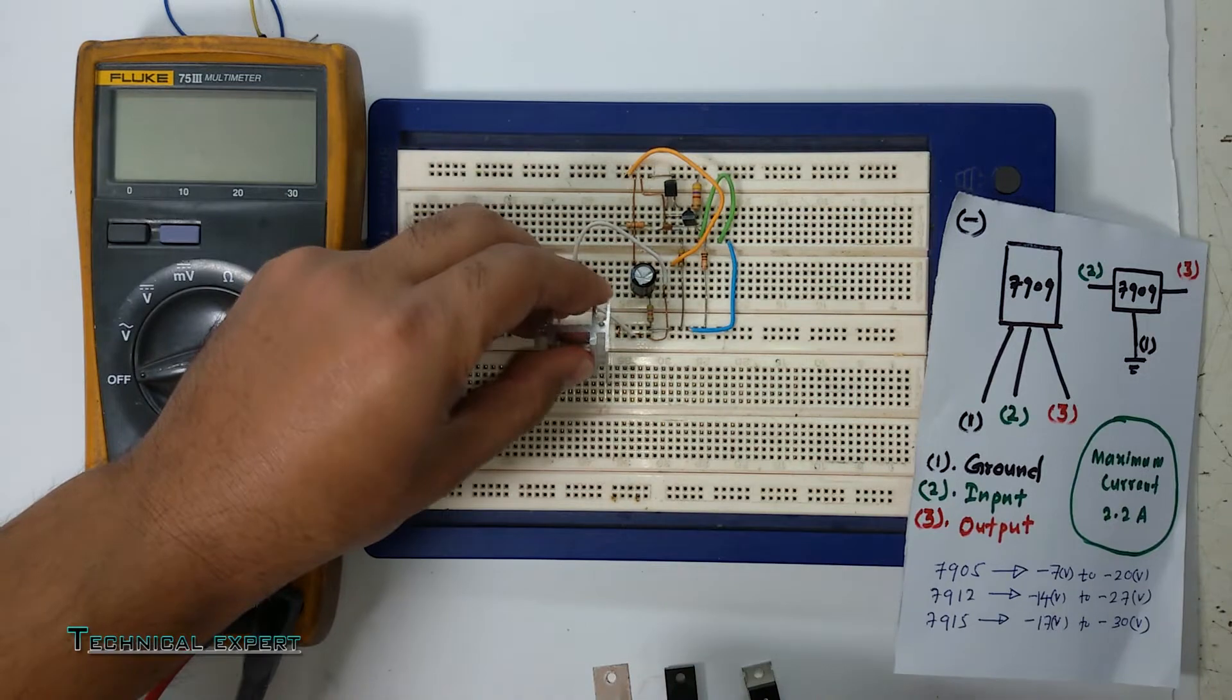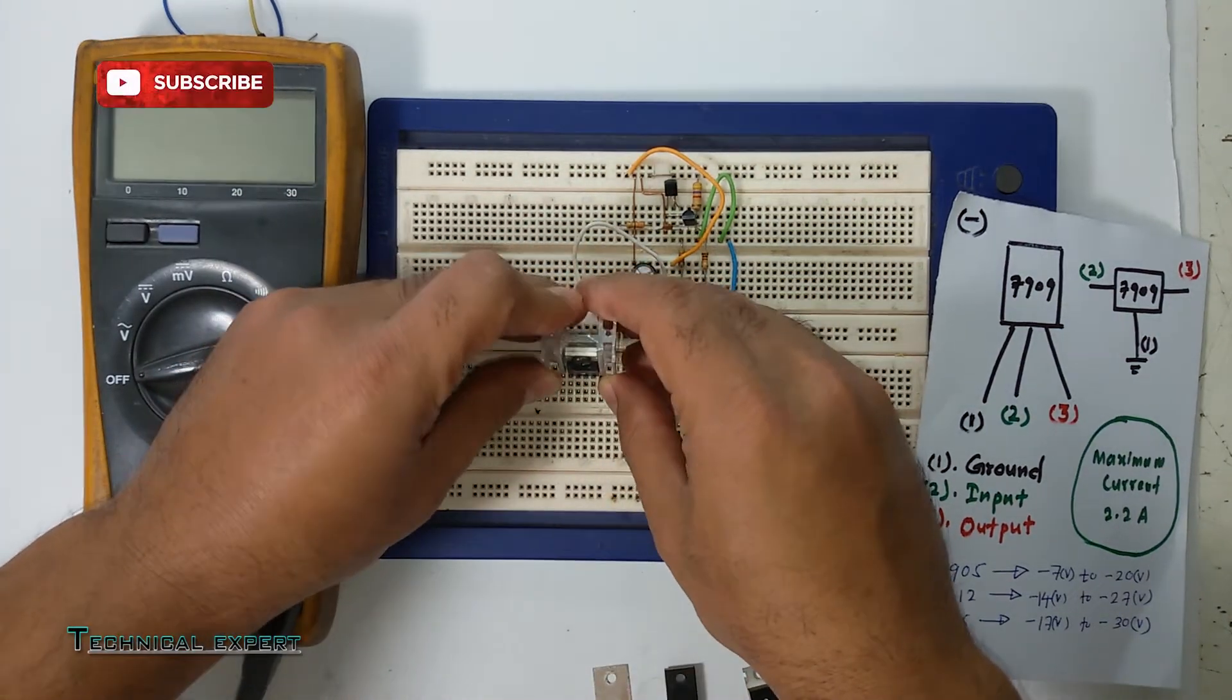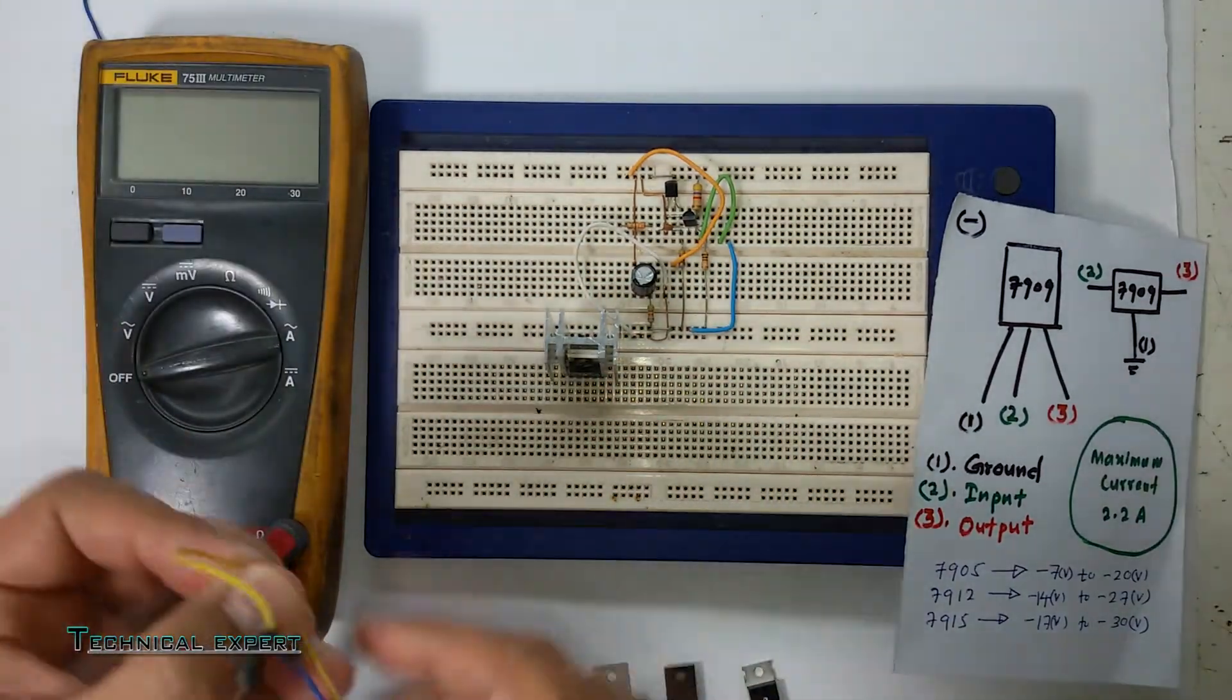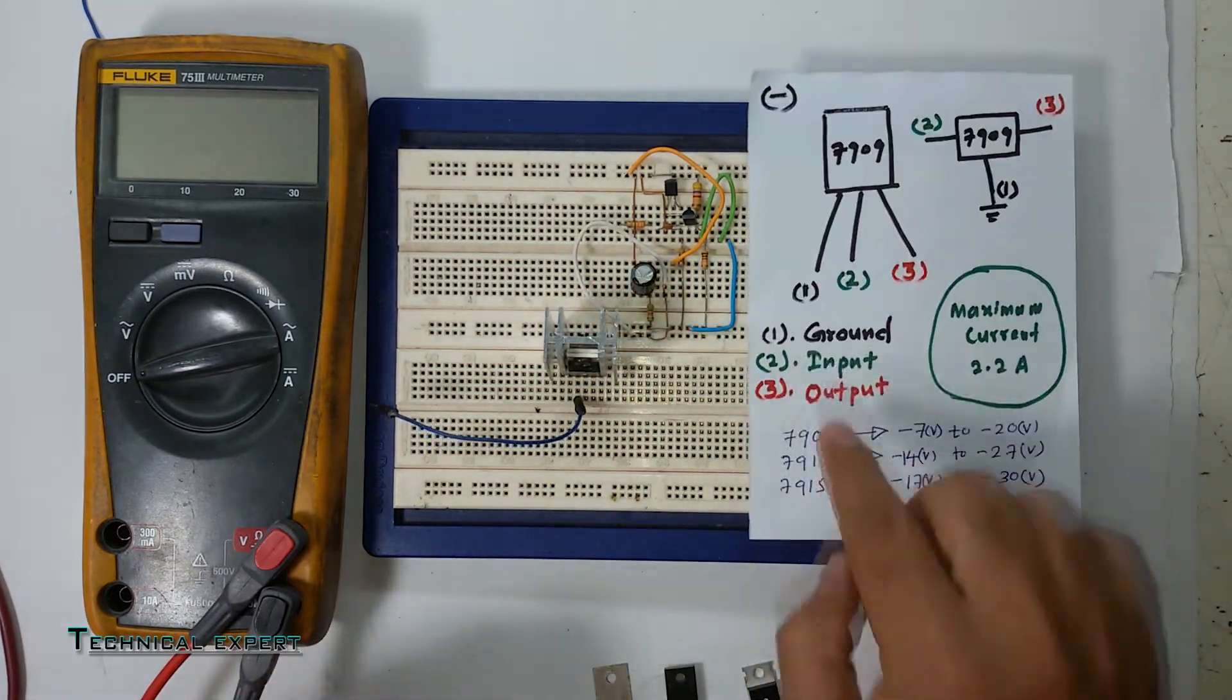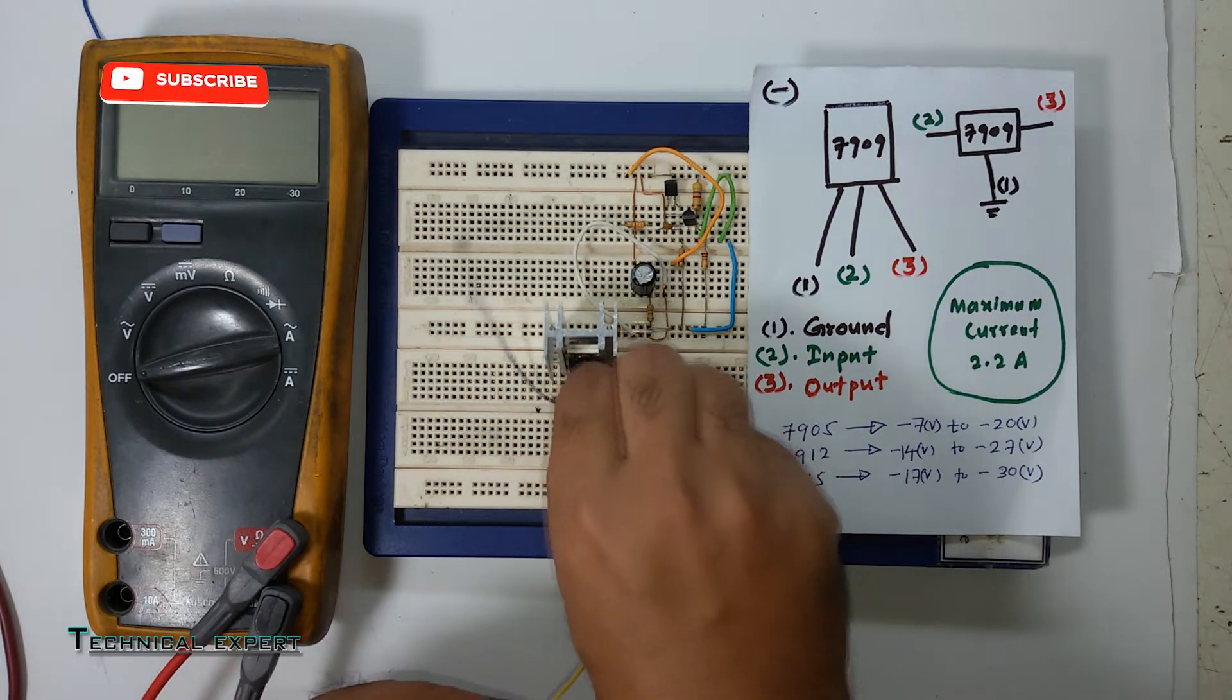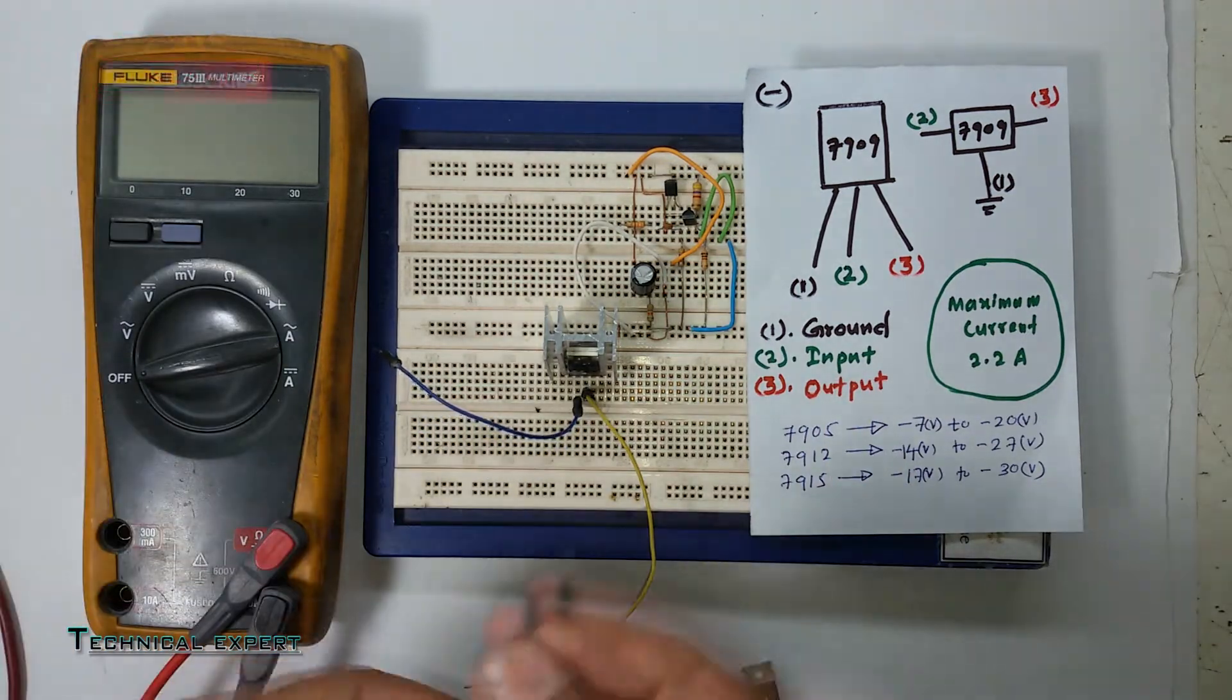Here we have three wires. We'll use pin one as ground, pin two as input, and pin three as output.